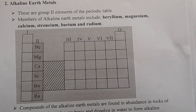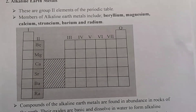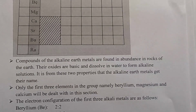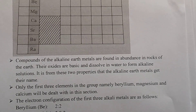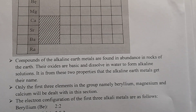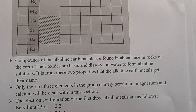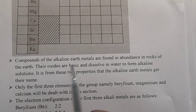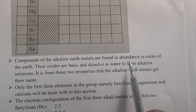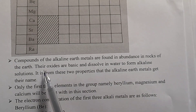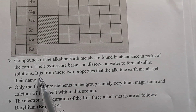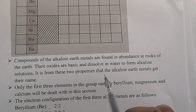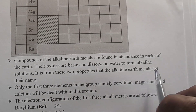Compounds of alkaline earth metals are found in abundance in rocks of the earth. During the exam, you can be asked: give a reason why magnesium, calcium, and beryllium are said to be alkaline earth metals. The reason is that compounds of alkaline earth metals are found in abundance in rocks of the earth, and their oxides are basic and dissolve in water to form alkaline solutions. It is from these two properties that the alkaline earth metals get their name.